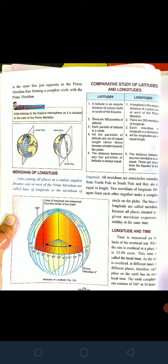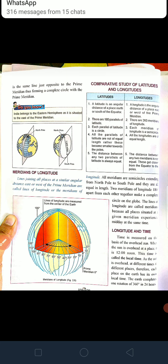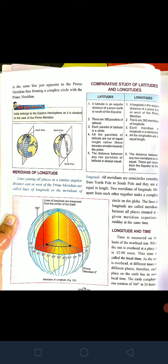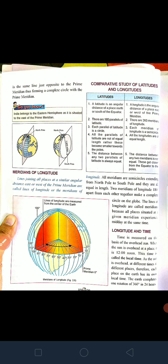Meridians of longitude are lines joining all the places at a similar angular distance east or west of the prime meridian; these are called lines of longitudes or meridians of longitudes. Lines that join places whose east or west distance from the prime meridian is equal are called meridians of longitudes or lines of longitudes.